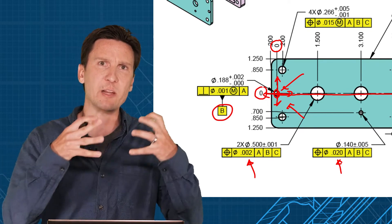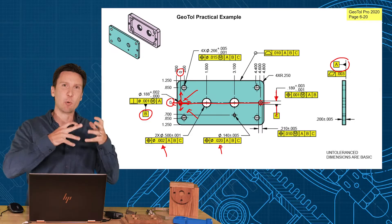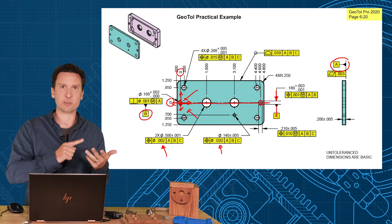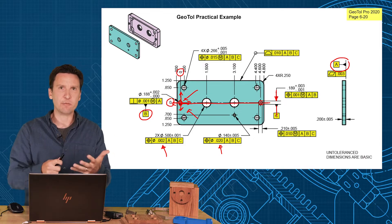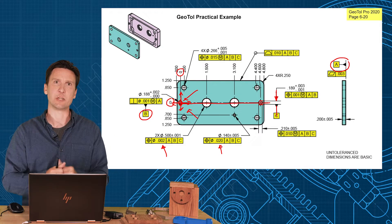Datum features are so important. They're the ambassadors of how they talk to the mating part. You want to pick those of the alignment pins, the dowels, the locators, the pilots. How does it fit? How does it mount? Those are our leaders for the piece, our datum features.